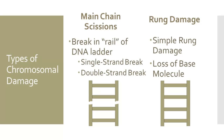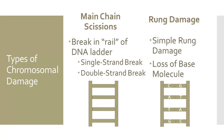A double strand break, where both rails are involved, is far more damaging to the DNA molecule. This type of damage can happen when an alpha particle plows through, or it can happen when an X-ray photon interacts with one rail and the resulting scattered photon interacts with another rail. It is nearly impossible for the DNA molecule to repair itself, and the result is usually a frame-shift mutation. These chemical changes alter the sequence of the genetic code and are bad news for the cell.